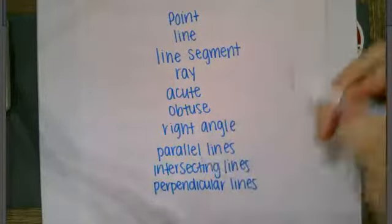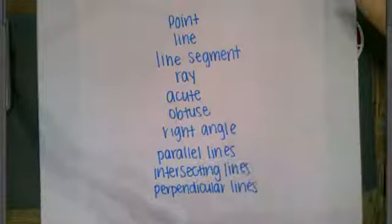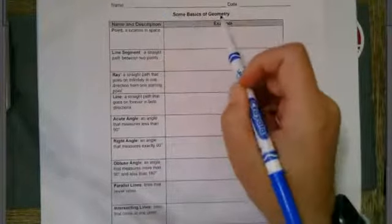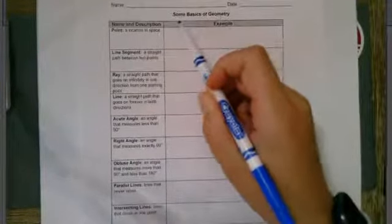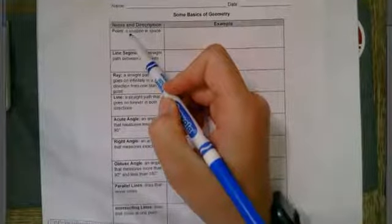Today, we are going to build shared definitions around these words and provide an example of each one of them. You are going to need this worksheet, and go ahead and do it with me, on some basics of geometry. It's also going to be helpful to have a ruler or a straight edge for this. We're going to read each vocabulary word, its definition, and create an example.